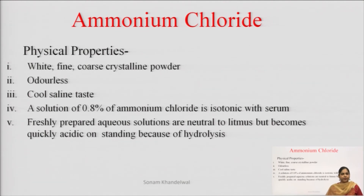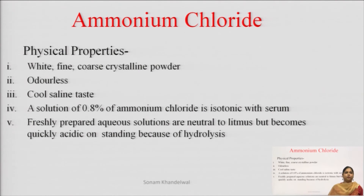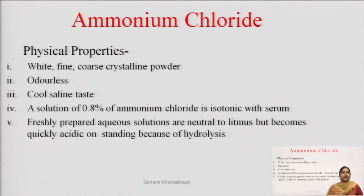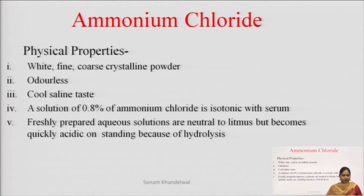Litmus paper turns red. If we take a freshly prepared solution and add a drop, the colour will not change — it means that it is neutral. But if we allow it to stand, then the hydrolysis will make it acidic. This is the pH paper, apart from litmus paper.